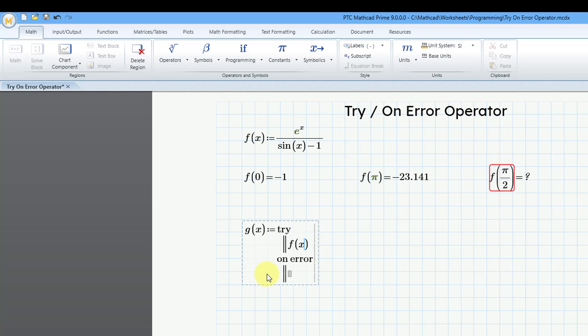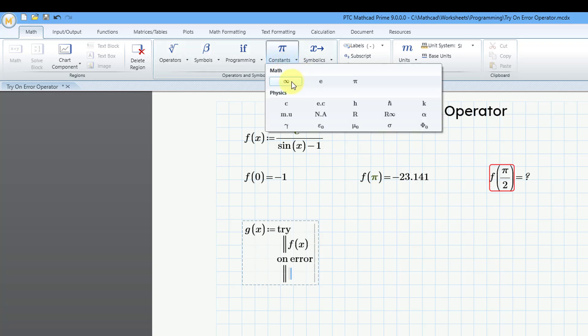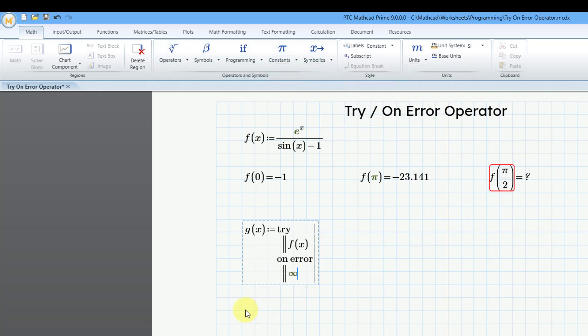And then for the other placeholder, I can choose what I want this to be evaluated to in case there is a problem. So in this case, dividing by 0, I really want it to have an infinite value. So I will go to my constants, and one of our math constants is infinity. And it's going to evaluate to 10 to the 307th power. So let's choose infinity over here.